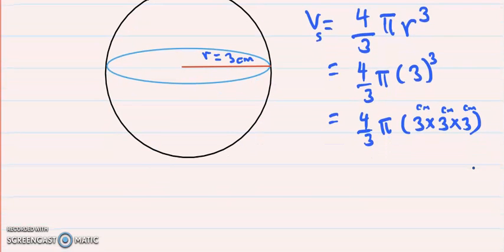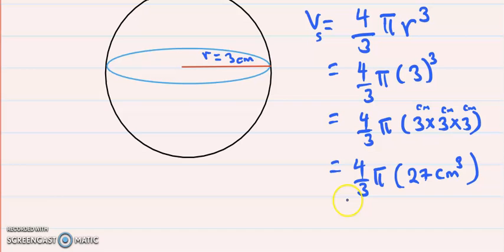Therefore, what that will give me is 4/3 multiplied by π times 3 times 3 times 3, which is equal to 27 cm³.